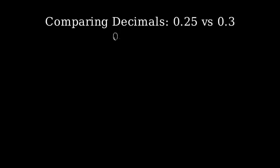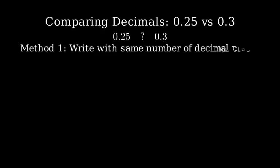Let's compare 0.25 and 0.3 to see which is greater. One way to compare decimals is to write them with the same number of decimal places.